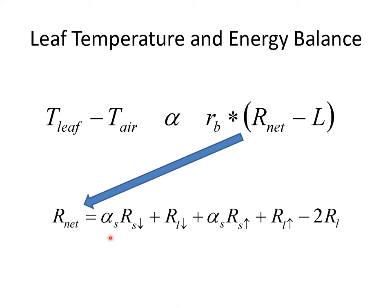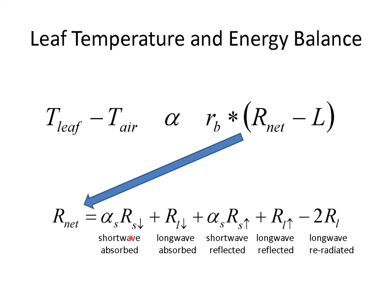Net radiation is a complicated term because it includes all of the shortwave radiation inputs and outputs and longwave radiation inputs and outputs. Here we have shortwave radiation absorbed, which is a function of incoming shortwave radiation multiplied by the shortwave absorption coefficient, the shortwave radiation reflected from the leaf, and then the longwave radiation absorbed and reflected from the leaf as well as longwave radiation re-radiated from the leaf. The sum of these inputs and outputs is the net amount of radiation absorbed by the leaf.